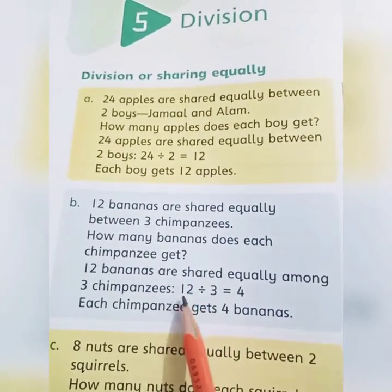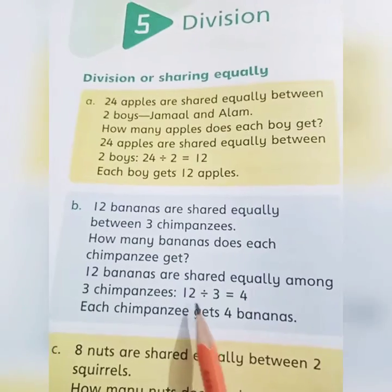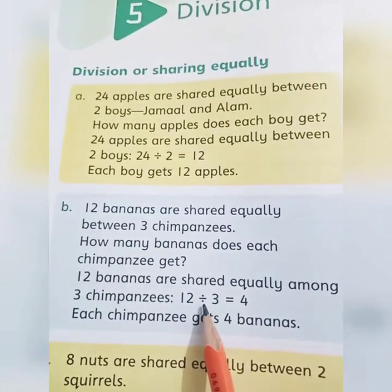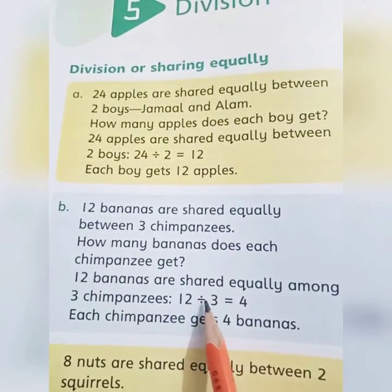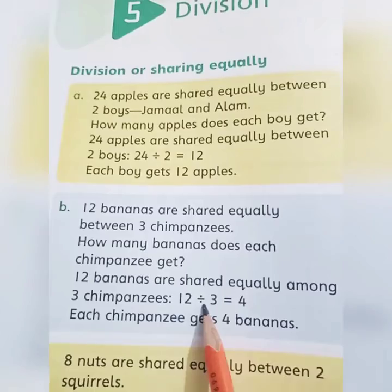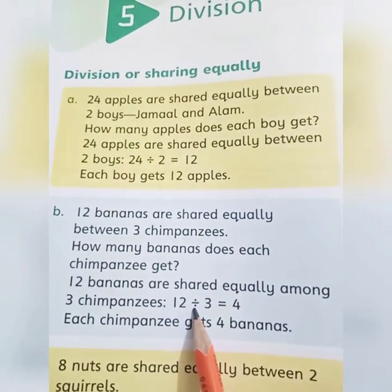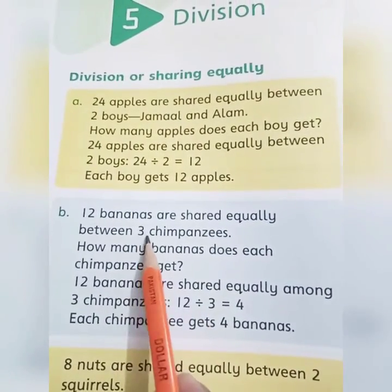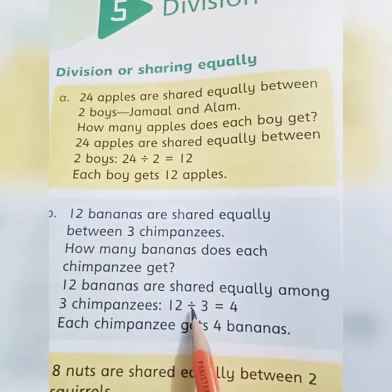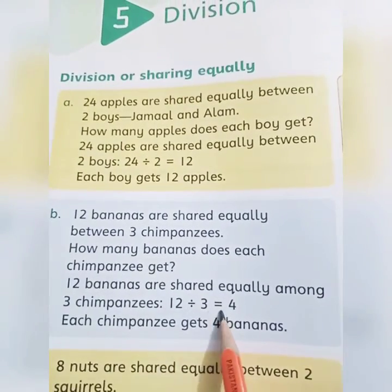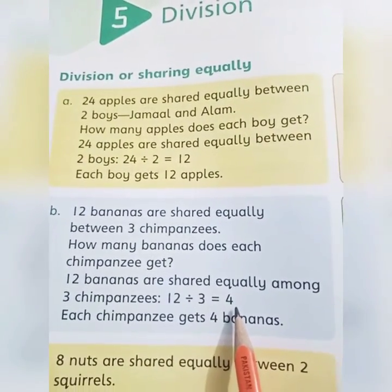12 bananas. How many bananas does each chimpanzee get? Now how will we write this in mathematical terms? 12 bananas are shared equally among 3 chimpanzees. How many bananas do we divide? 12. What do we do? Divide — this is the division sign. So 12 divided by 3 equals...